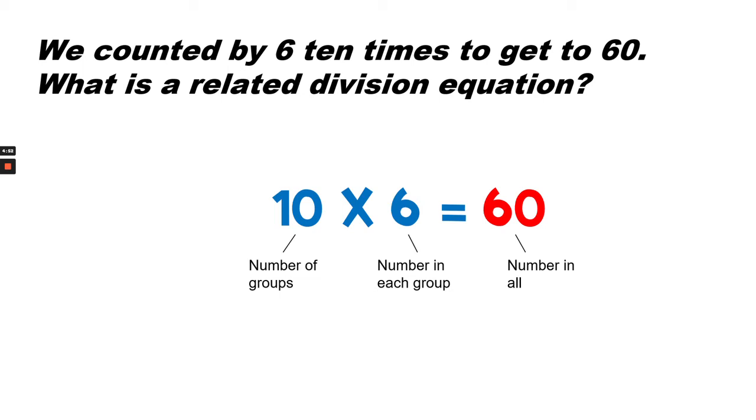What is a related division equation? So 10 times 6 is the same as 10 groups of 6. 6 is the number in each group and 60 is the number in all.